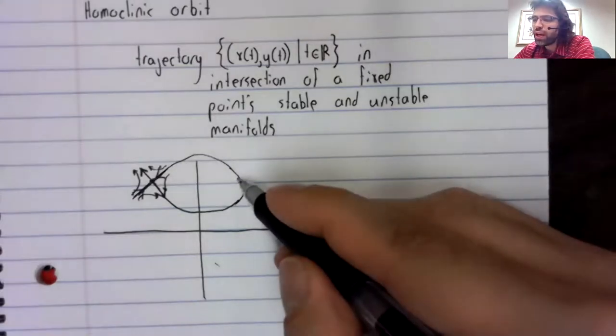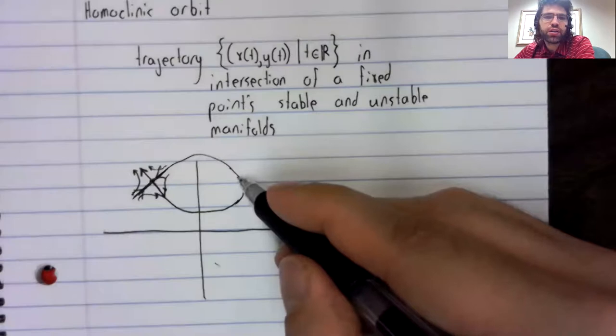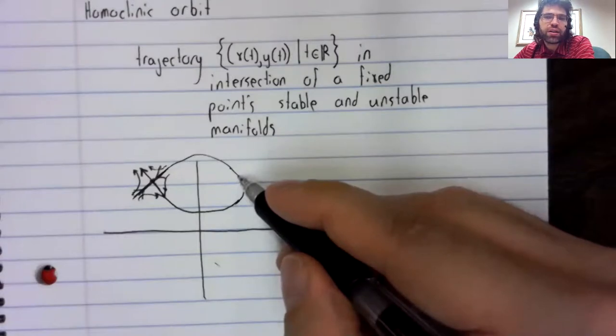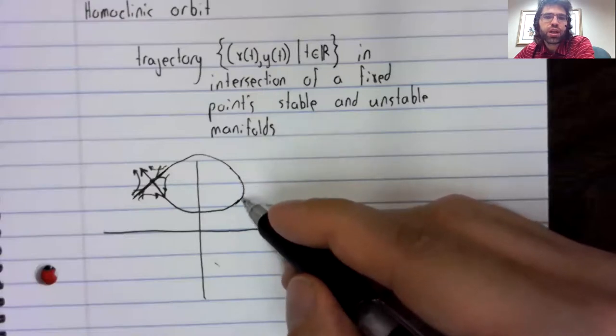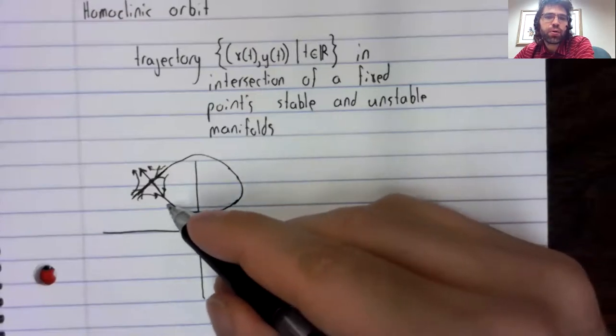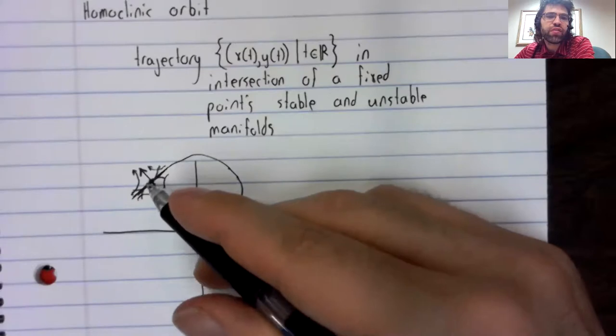So if we have a point on this trajectory, it's in the unstable manifold of the fixed point. If we travel time backwards, we converge to the fixed point.